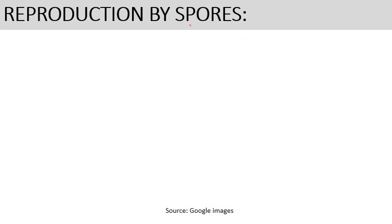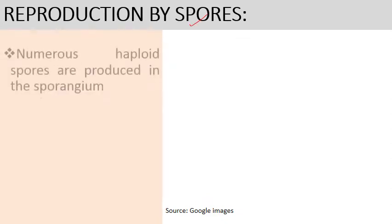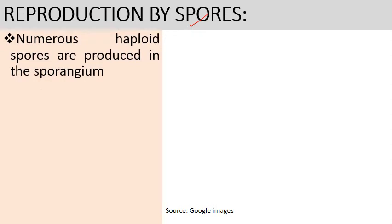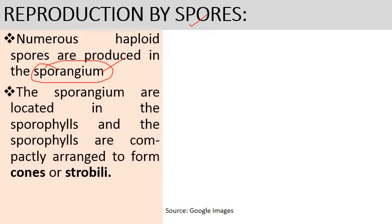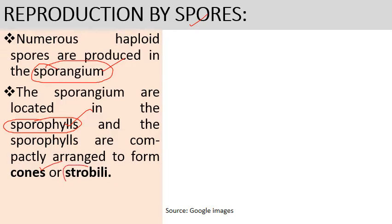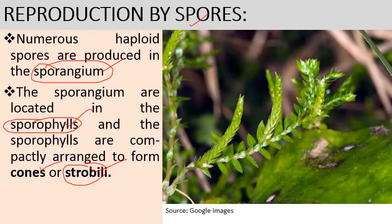Next comes reproduction by means of spores. There are numerous haploid spores which are produced in the sporangium. The sporangia are located in special leaves, and they are compactly arranged to form a cone-like structure, also known as strobilus (singular) or strobili (plural).